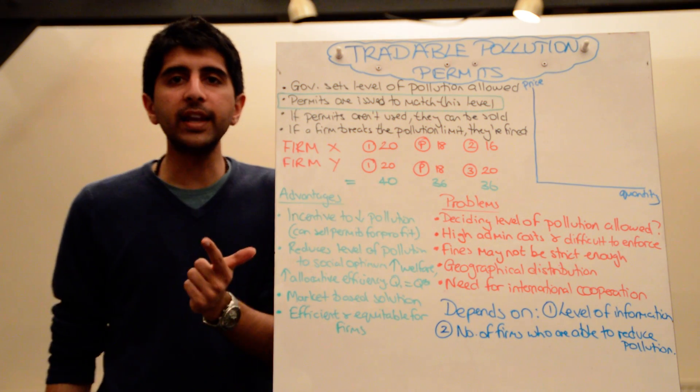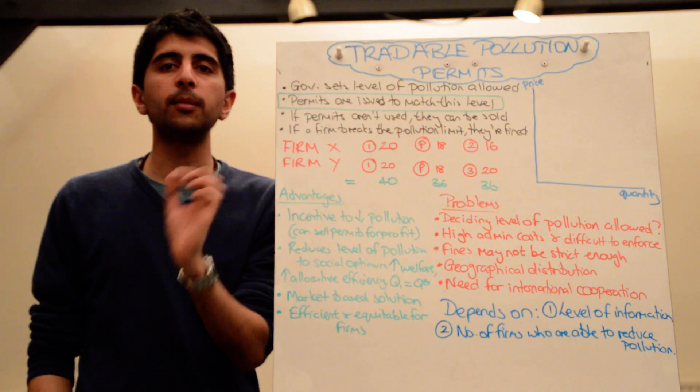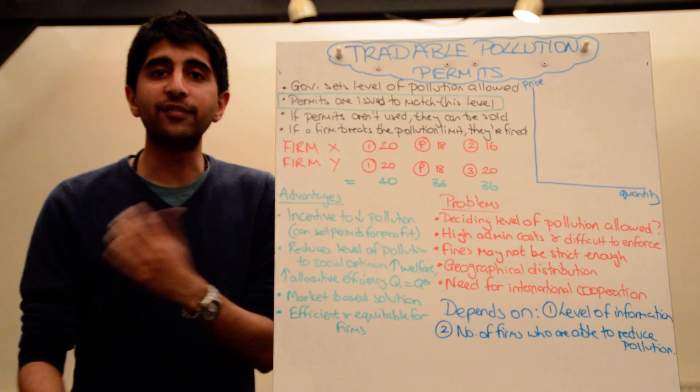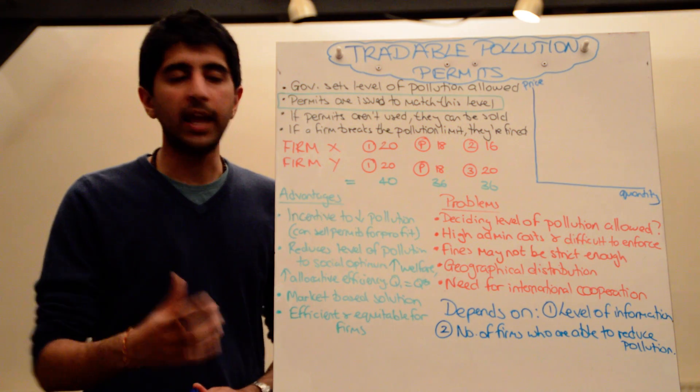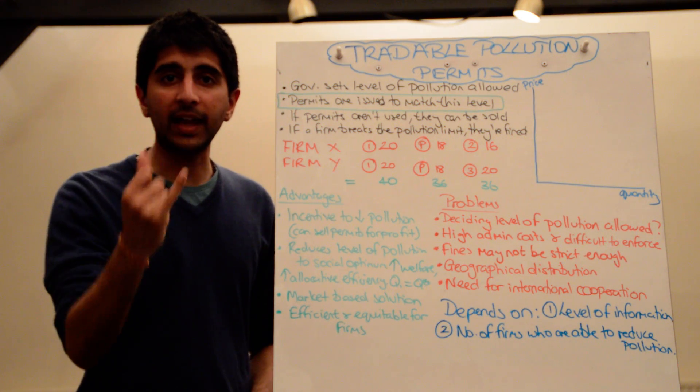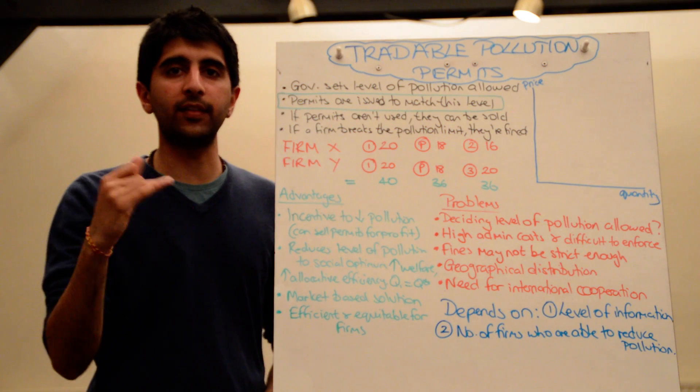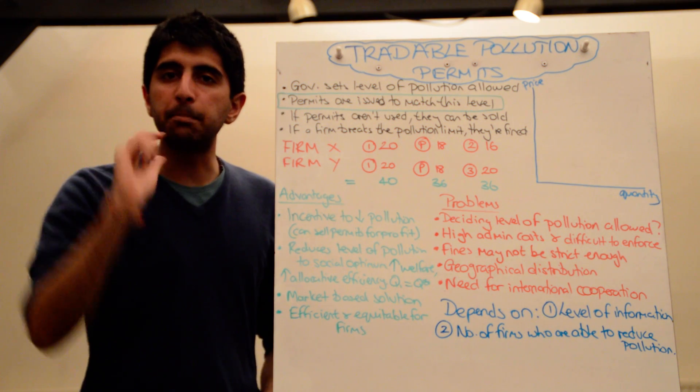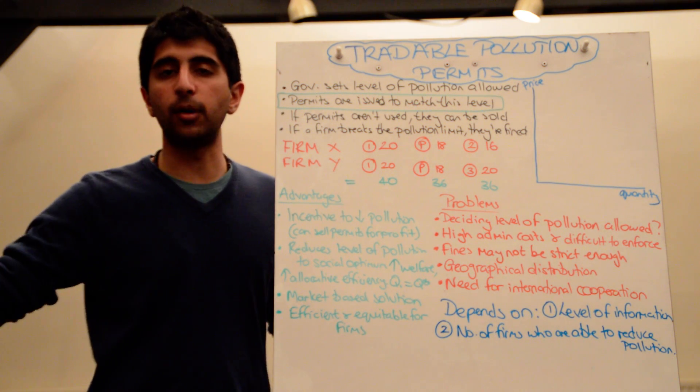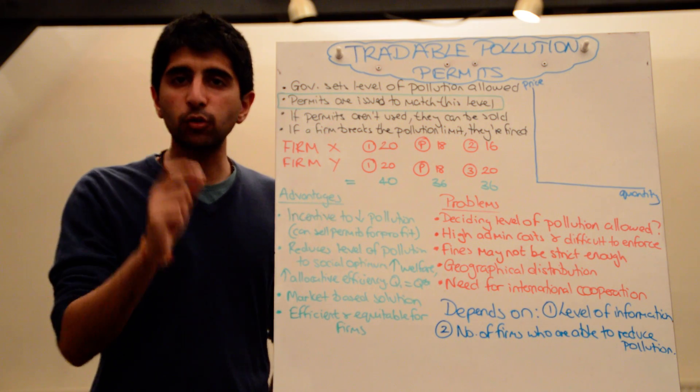Either they can decide to take the cost of reducing pollution, if that's investing in more efficient technology, investing in green technology to bear that cost of doing so. They can make that decision, or they can make the decision of actually to continue polluting at the same level, but instead to buy permits now from other firms who have got spare. Whichever decision costs them less money, that's what they're going to do.